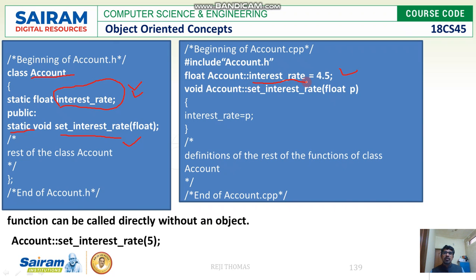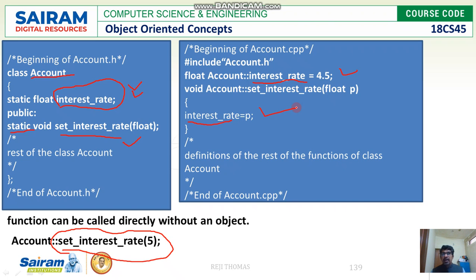We have not created any object. Without creating any objects, we have done it. We have also accessed this directly — state is equal to p — we are accessing it. So without taking help of an object, we can access the data member and member function if it is defined as static.